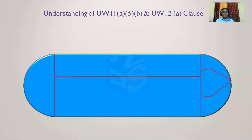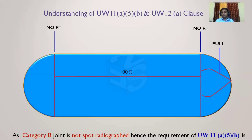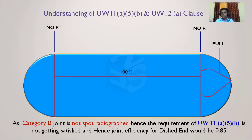Consider the same example again: no radiography on the head (left), category A L-seam is 100% radiographed, and no radiography on the right head. We are doing full radiography for the head (dish end) on category A. However, since no spot radiography is done for the shell-to-head junction, we cannot take joint efficiency of 1 — neither for the shell nor for the head. Even after 100% radiography of the category A joint, joint efficiency must be 0.85.